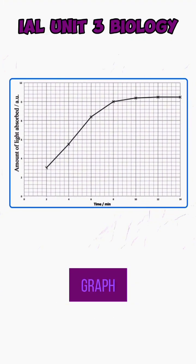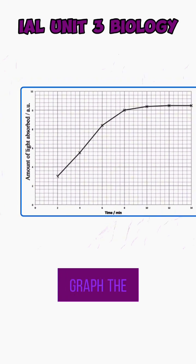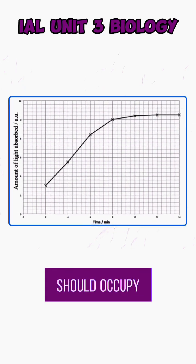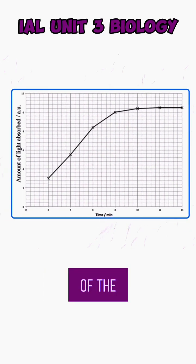The Unit 3 exam always involves drawing a graph, so train yourself to draw a graph the right way. Graphs should be drawn point to point with the ruler, and you should occupy more than two-thirds of the given grids.